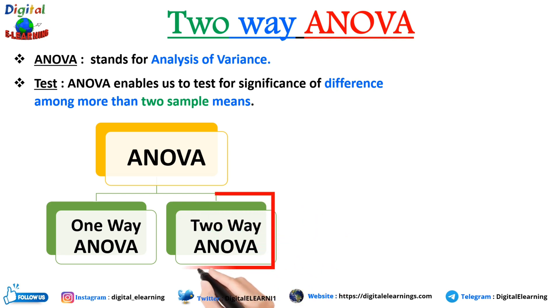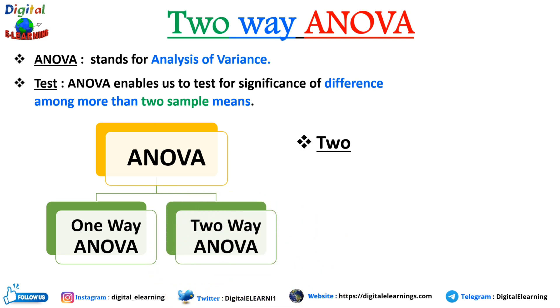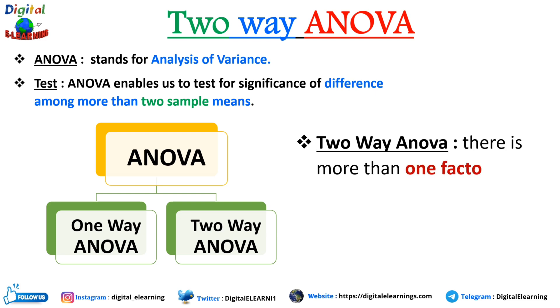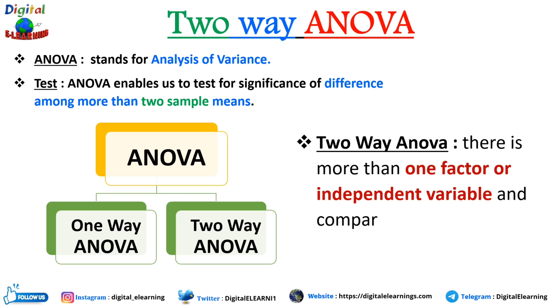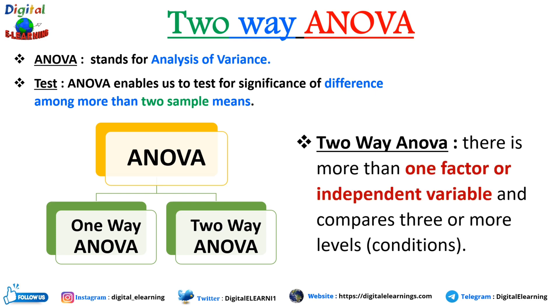Today we will be focusing only on the two-way ANOVA. In two-way ANOVA, there is more than one factor or independent variable, and it compares three or more levels or conditions.